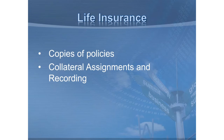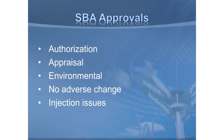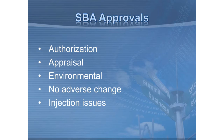We've talked about the various approvals and the authorization. You've got to follow your various requirements with appraisals, environmental, and no adverse change. We also talked about injection at the outset — with a 7A loan, to the extent capital injection is required, there's a rebuttable presumption that if you don't prove it and there's a default within the first 18 months, that was the reason for the failure of the business — lack of capital.